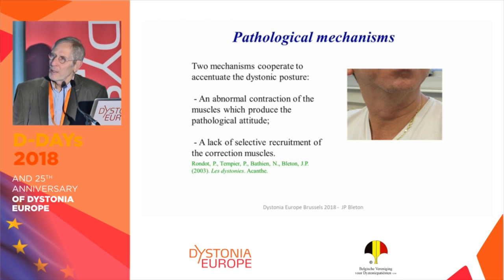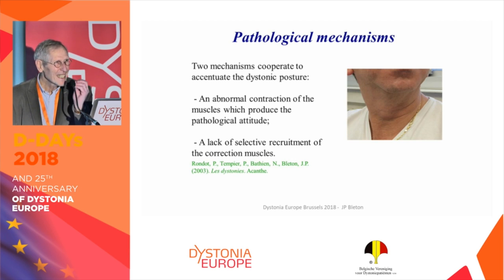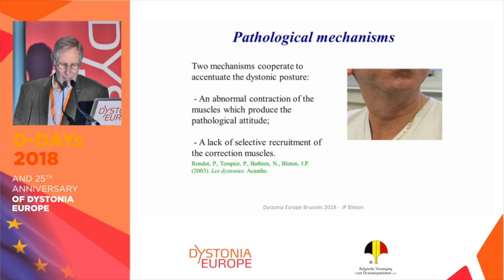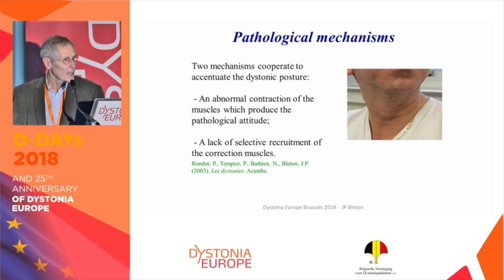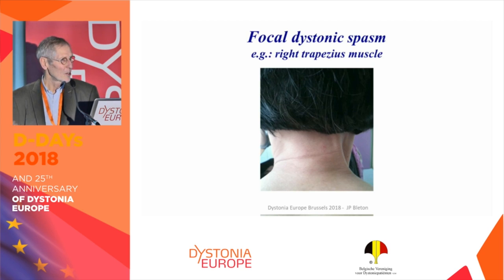To summarize, there are two main mechanisms which produce the abnormal posture: the contraction of the dystonic muscle — the muscle injected by the neurologist — and a lack of selective activity of the corrective muscle. If you observe this patient, the right sternocleidomastoid is overactive and the left one is underactive. If you inject the overactive one, you have to develop the ability to contract the antagonist muscle. And we can't reduce dystonia to one muscle — it's a combination of muscles. It is a movement disorder, not a muscle disorder.